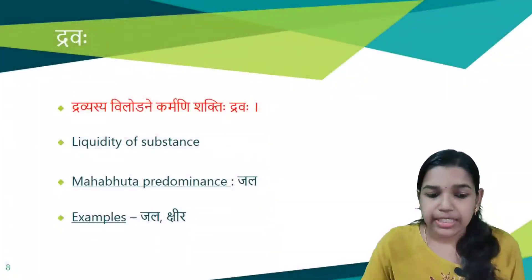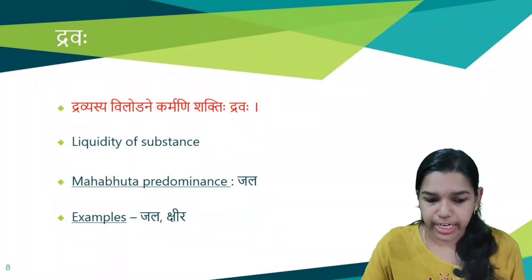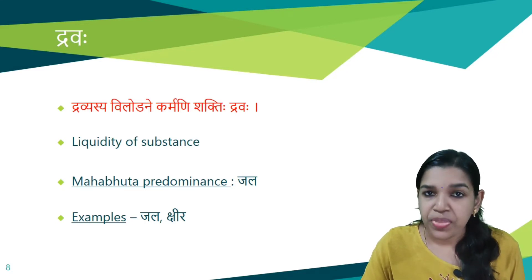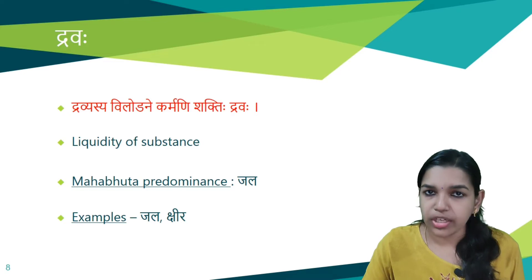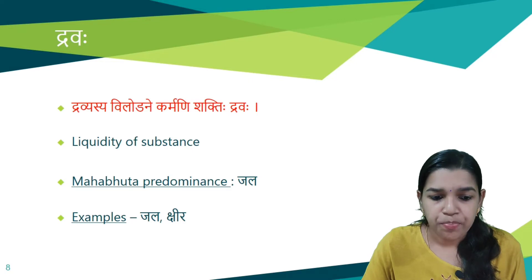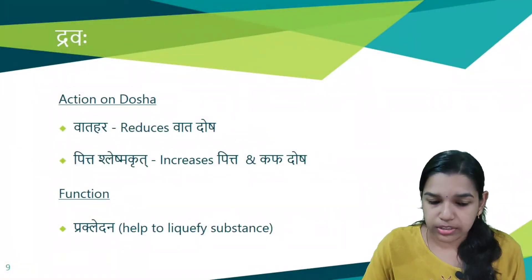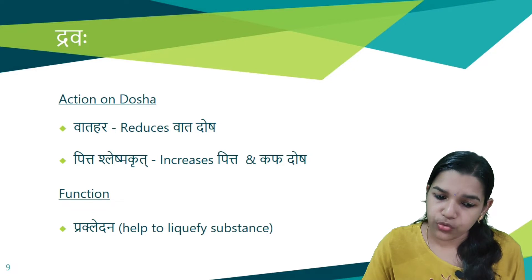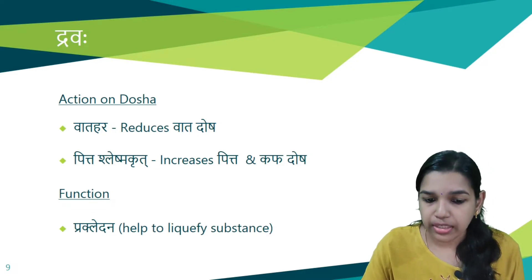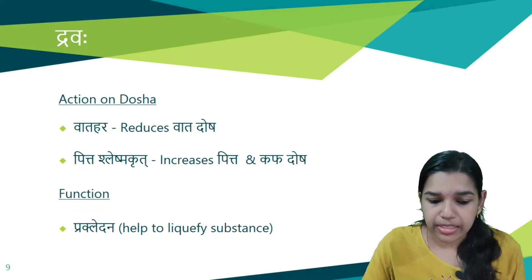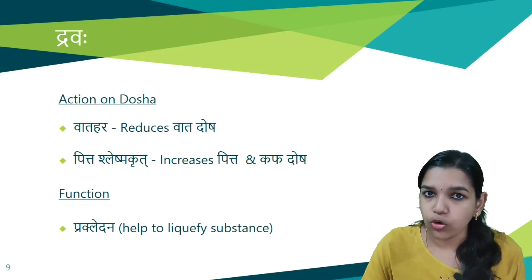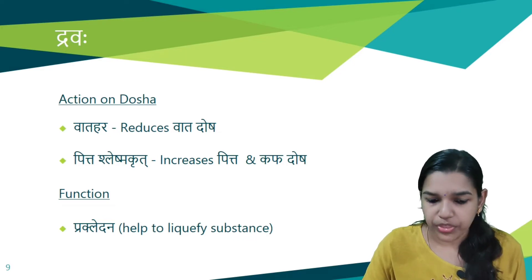Next is Drava guna. Dravyasya vilodane karmani shakti hi drava. That is the liquidity of a substance is called Drava, that is liquid nature. Jala is the predominant Mahabhuta. Examples are jala and kshira. The actions carried out by drava guna are vata hara, that is reduces vata dosha, and pitta shleshma krit, that is increases pitta and kapha dosha. And it is prakletana, that is it helps to liquefy substances.